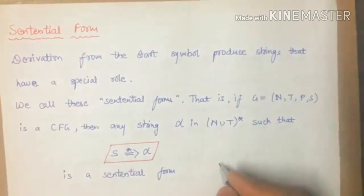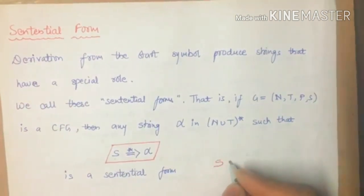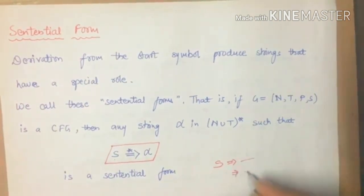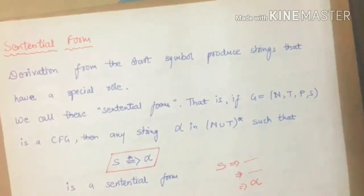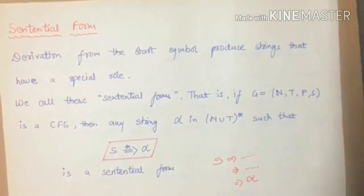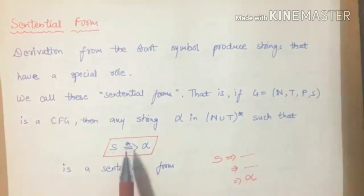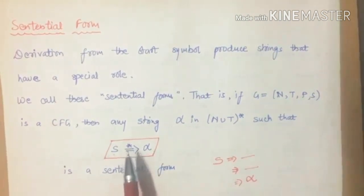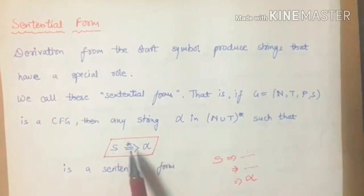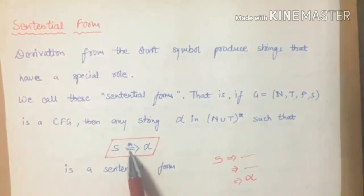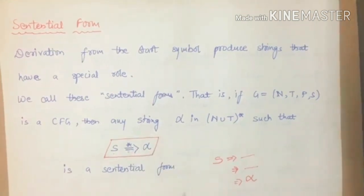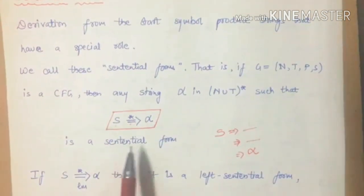When we write this, we start from S and apply some rules, then we apply another rule, and so on. What did we get? Alpha. What does this mean? Sentential form. Star, like I have already told you, represents 0 or more. So we apply 0 or more steps to derive alpha. We call this the sentential form.